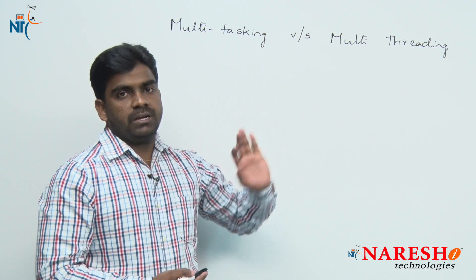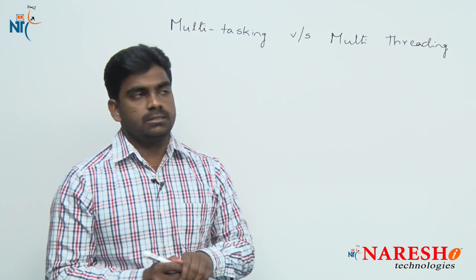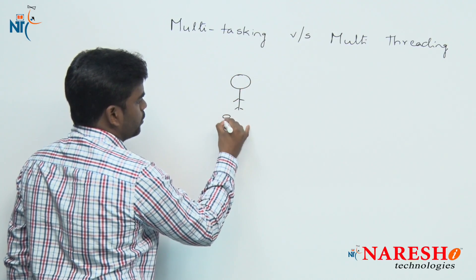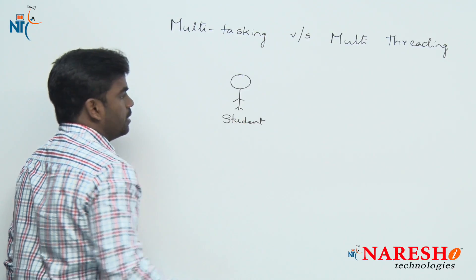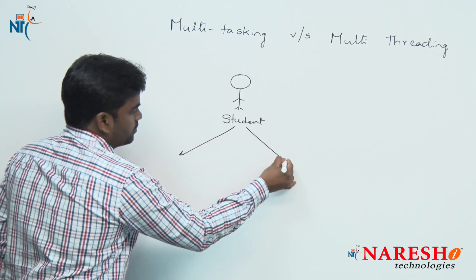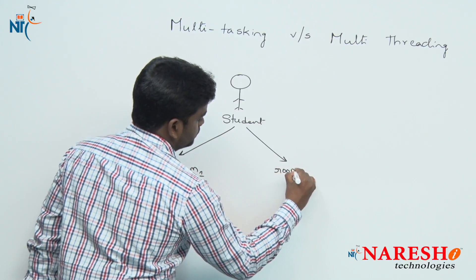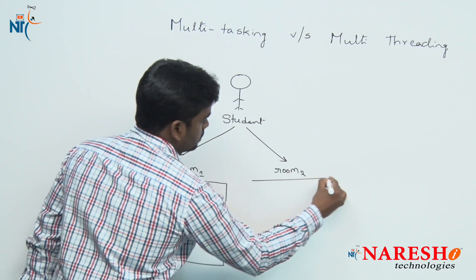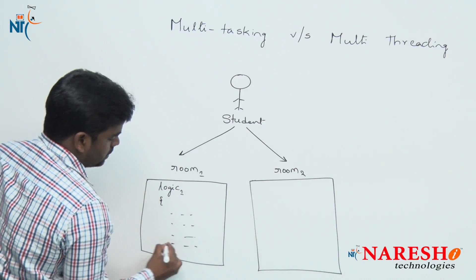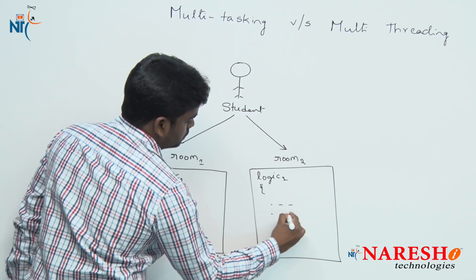Simply, if you want to explain in any interview: what is multitasking and what is multithreading? Consider one example — there is a student, just like a system processor. We are giving two tasks to the student: suppose there is a room 1 and a room 2, and we are asking the student to write two logical programs — logic 1 in room 1 and logic 2 in room 2.